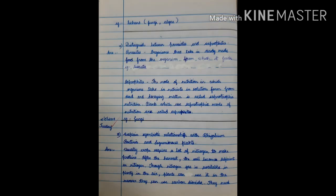Seventh question. Distinguish between parasites and saprophytes. Answer. Parasites. Organisms that take in ready-made food from the organism from which it feeds. Example. Cuscuta. Saprophytes. The mode of nutrition in which organisms take in nutrients in solution form from dead and decaying matter is called saprotrophic nutrition. Plants which use saprotrophic mode of nutrition are called saprophytes. Example. Fungi.